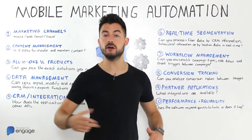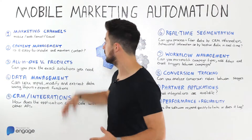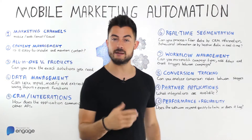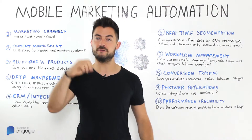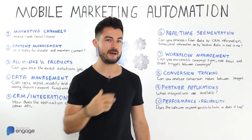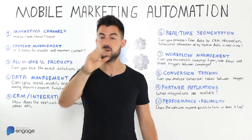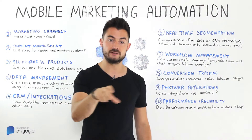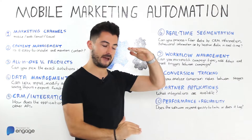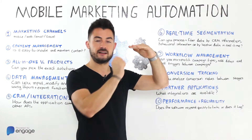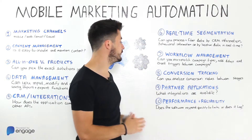Number seven: workflow management. This means you can mix and match channels — push, in-app, email — one after the other. For example, first send an email; if they don't open it, send a push two days later; if they don't open the push, trigger an in-app message. You can set time-delay buffers between each step. It's a series of campaigns across different channels sent at different times based on events or the lack of certain events occurring.